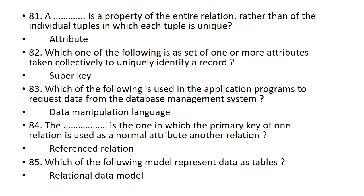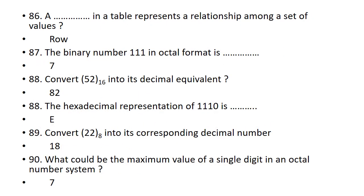Which one of the following is used in an application program to request data from a database management system? Data Manipulation Language (DML). The foreign key is the one in which the primary key of one relation is used as a normal attribute in another relation. Which one of the following models represents data as tables? Relational data model. A row in a table represents a relationship among a set of values.